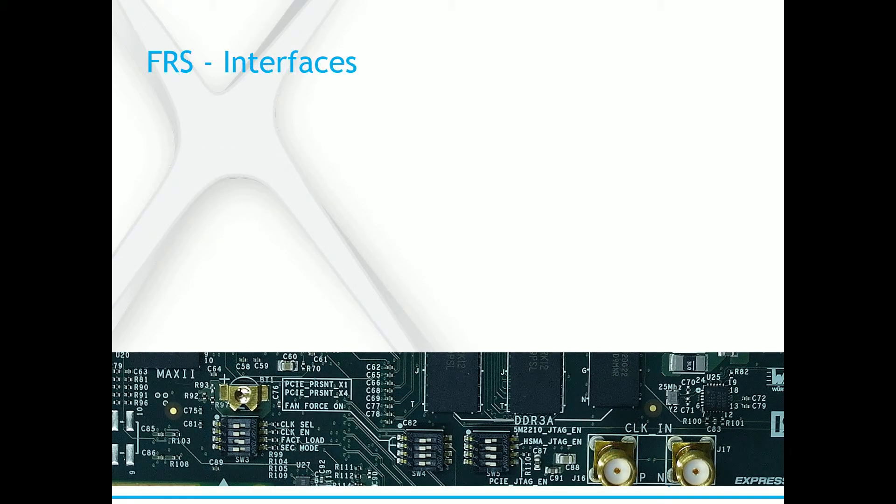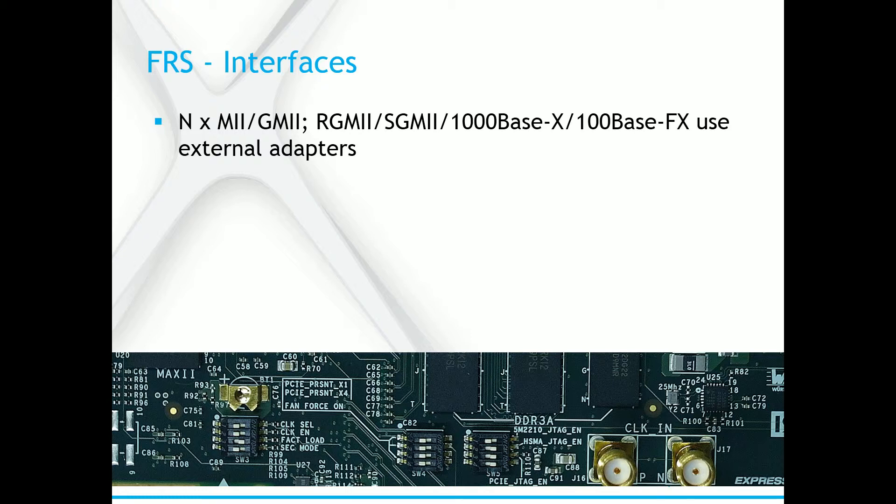Natively, FRS has MII and GMII interfaces. Other interface options like RGMII and SGMII are implemented using adapters. The amount of Ethernet interfaces is not fixed. FRS can support anything from 3 to 8 ports. More ports means that FRS consumes more FPGA resources, which influences what size of an FPGA chip the design can fit in.